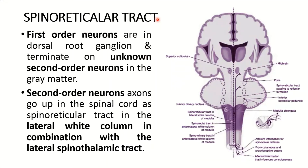The second tract is the spinoreticular tract. As the name suggests, it goes from the lower spinal cord to the reticular formation, which lies in the medulla, pons, and midbrain. The first-order neurons are in the dorsal root ganglion and the second-order neurons are in the dorsal gray column — their exact site is unknown. The axons of these second-order neurons ascend in the spinal cord as the spinoreticular tract in the lateral white column, in combination with the lateral spinothalamic tract.